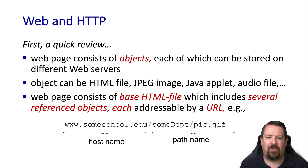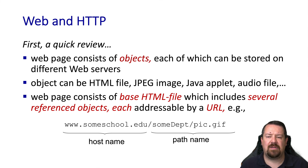These objects can be more HTML pages, code such as JavaScript, images such as JPEGs. Each of these referenced objects has its own unique URL and need not be hosted on the same server as the base web page.